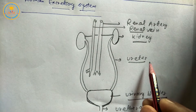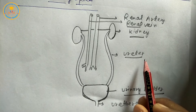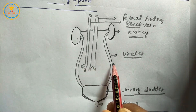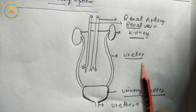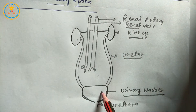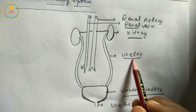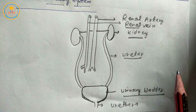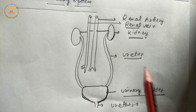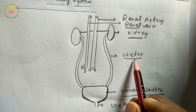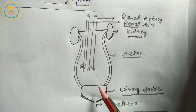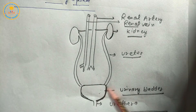Next, accessory excretory organs. First: ureter. Number: one pair, meaning two. Location: between the kidney and urinary bladder. Shape: tube-like, meaning tubular structure. Function: to receive urine from the kidney and transfer it to the urinary bladder.